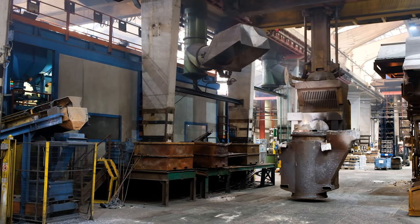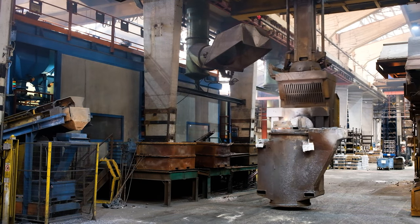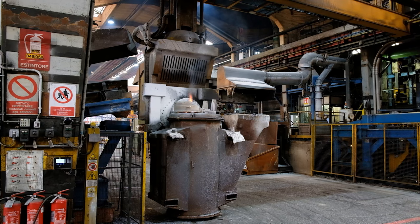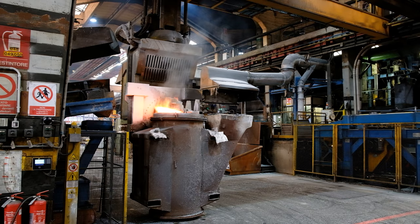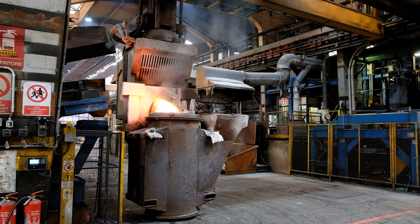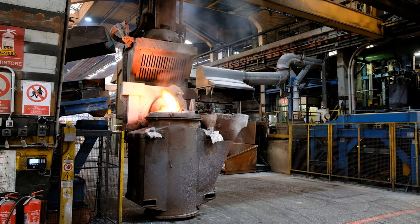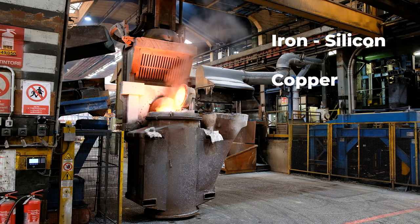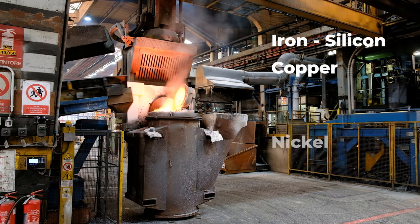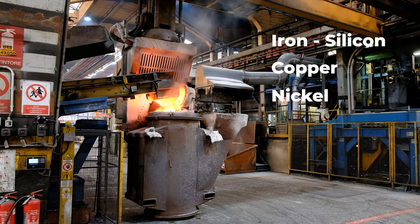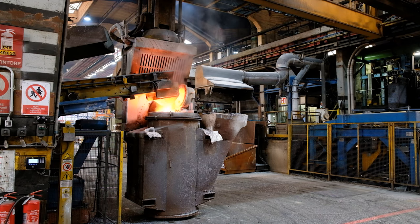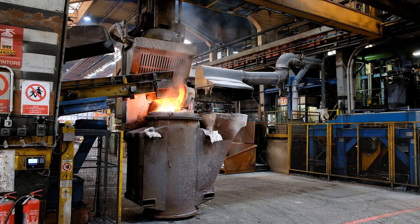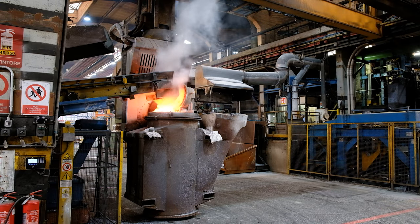The ladle, maneuvered by a crane before hosting the liquid base cast iron, passes through a loading station where spheritizing alloys and corrective materials for the composition are introduced. For example, ferrule alloys such as ferrosilicon, and pure metals such as copper and nickel. This is necessary to reach the optimal conditions to obtain the spheritization reaction and the chemical composition of the final cast iron.